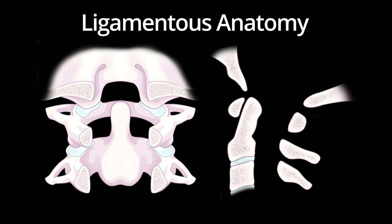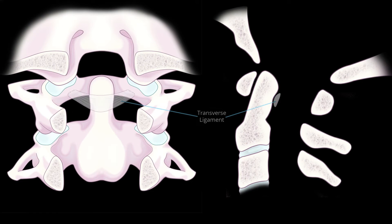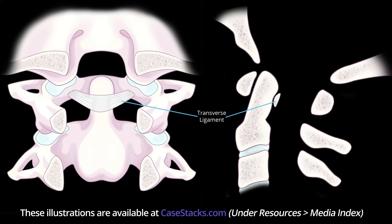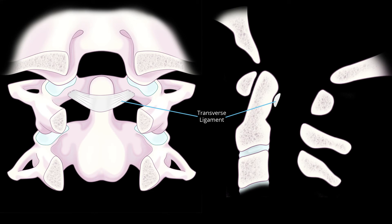Let's now look at some of the key ligaments of the cranio-cervical junction. The transverse ligament is one of the strongest ligaments, and it runs posterior to the dens and the anterior arch of the atlas. This ligament is one of the primary stabilizers of the atlanto-axial joint. It limits extension of the neck, and therefore it makes sense that the transverse ligament is usually injured in the setting of severe hyperextension injuries.